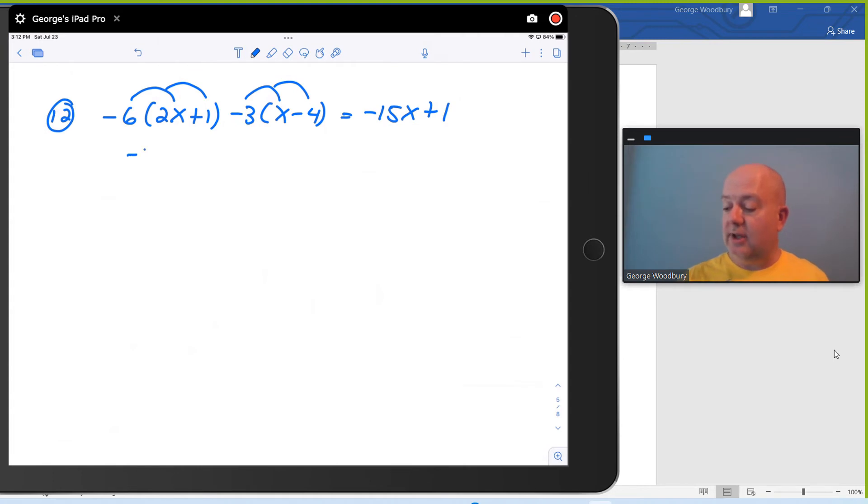Negative 6 times 2x is negative 12x. Negative 6 times positive 1, that's negative 6. So I write minus 6. Negative 3 times x, that's negative 3x. Negative 3 times negative 4, that's positive 12. And on the right side, I still have negative 15x plus 1.